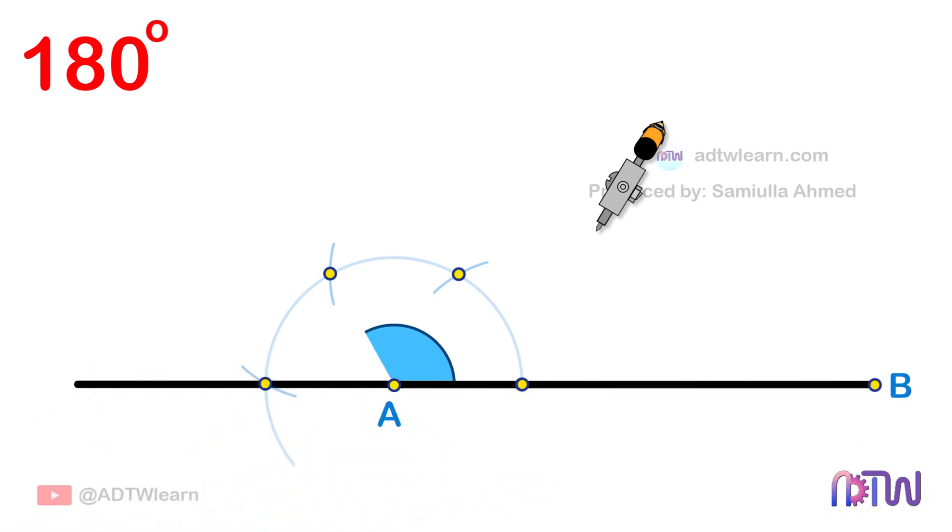Therefore, the angle from here to here will be 180 degrees. You can cross-check by using a protractor.